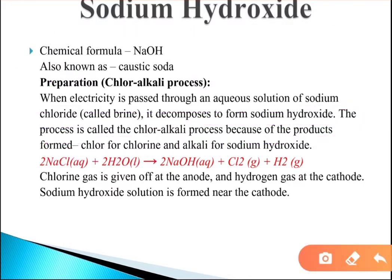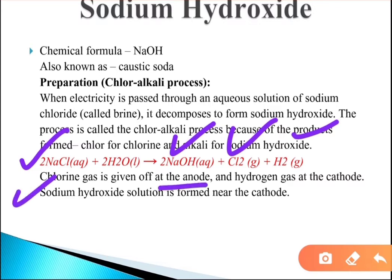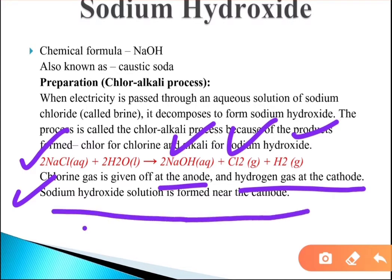In the chloralkali process, NaCl reacts with H2O to form NaOH, chlorine gas, and hydrogen gas. Chlorine gas is given off at the anode, hydrogen gas is collected at the cathode, and sodium hydroxide solution is formed near the cathode.